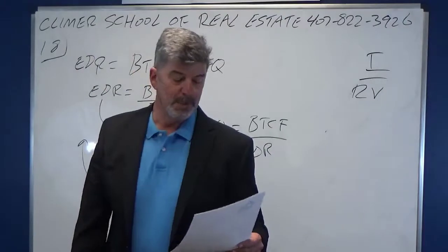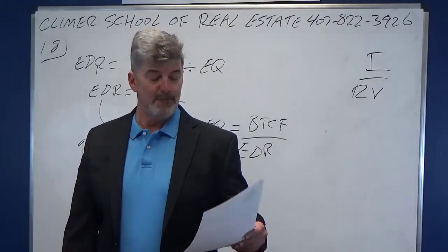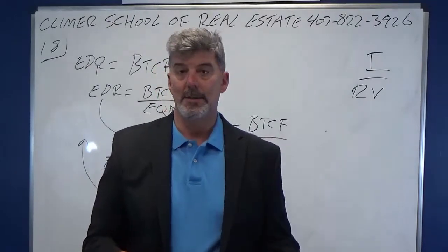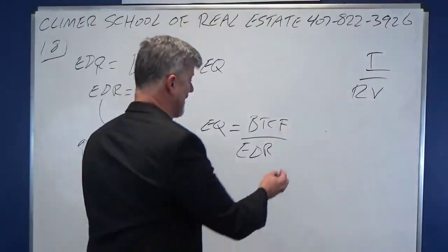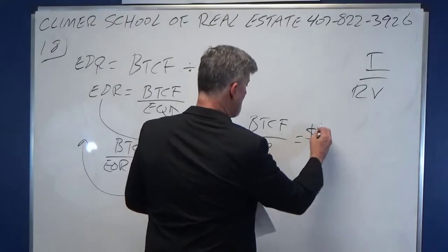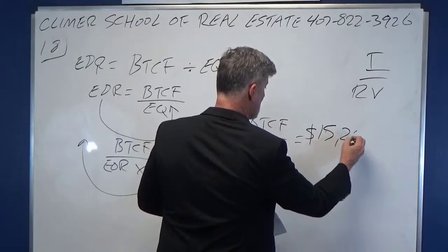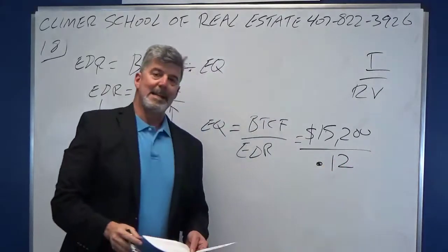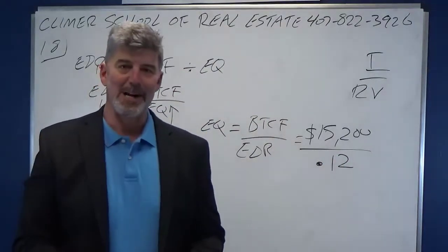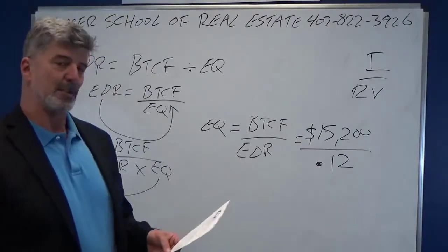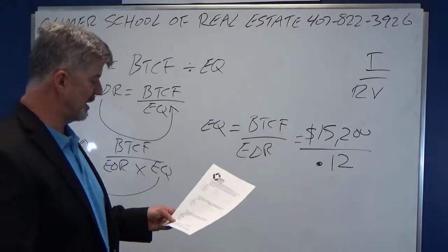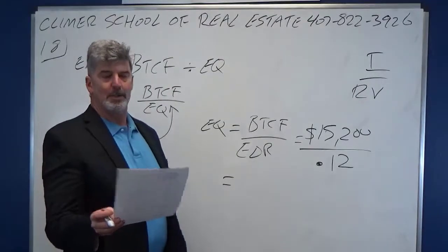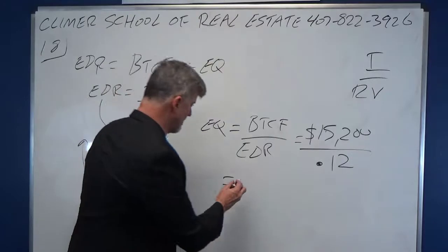Now I've got equity equals before tax cash flow divided by equity dividend rate. I gave you both of those. What's before tax cash flow? $15,200. What is the equity dividend rate that the investor wants? 12%. And now you've got top number divided by the bottom number. If you put those numbers into your calculator just like you see them, you get equity of $126,667.